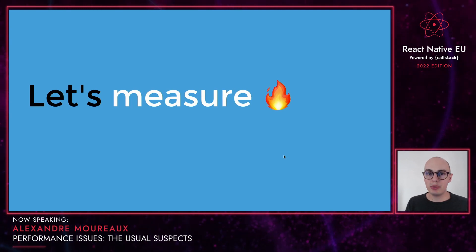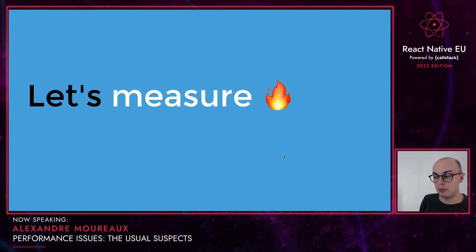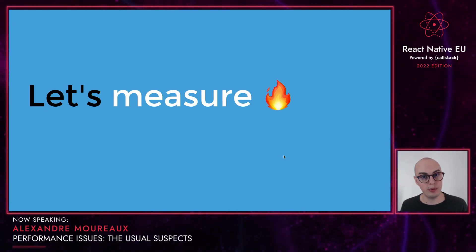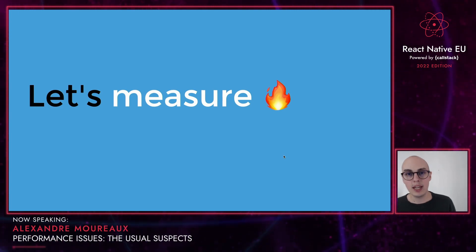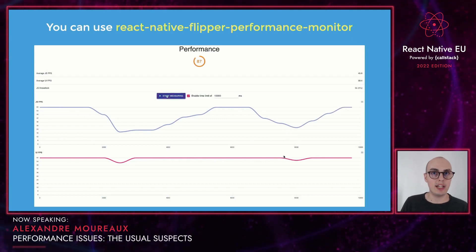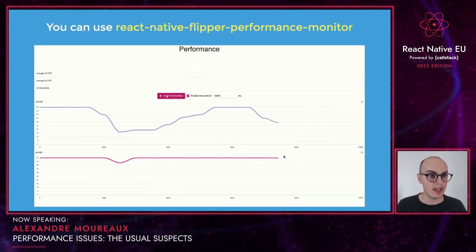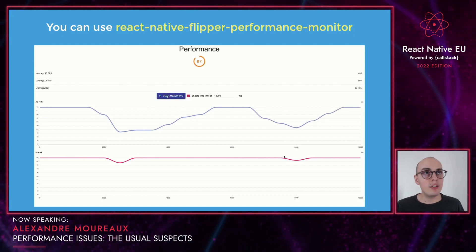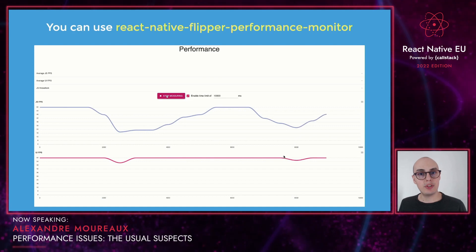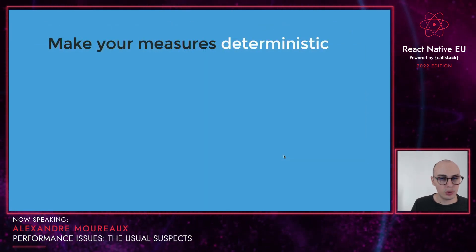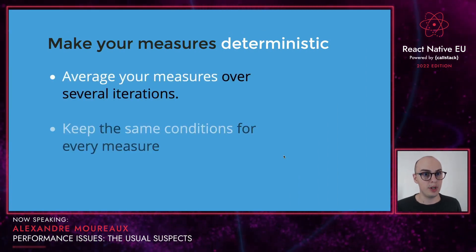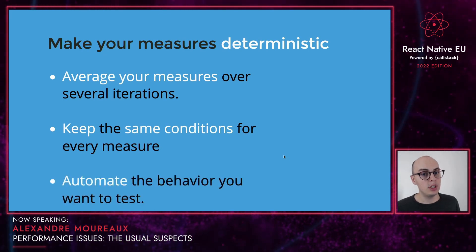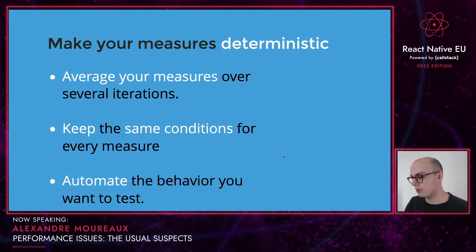But first, let's measure. Because we severely need to improve the startup performance of our app, and we're going to do so over several iterations. It would be nice to have a performance metric we can use to make sure that every iteration actually improves our performance. For that, we built a Flipper plugin called React Native Flipper Performance Mentor that you can use to track JS and UI FPS. However, performance measures are hardly deterministic, so you need to make them as deterministic as possible — average your measures over several iterations, keep the same conditions, and ideally automate the behavior you want to test like scrolling, clicking, etc.